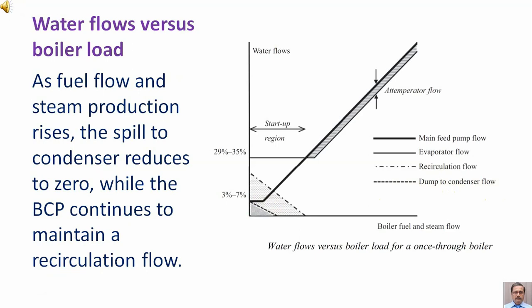As fuel flow and steam production rises, the spill to condenser reduces to zero, while the BCP continues to maintain a recirculation flow.